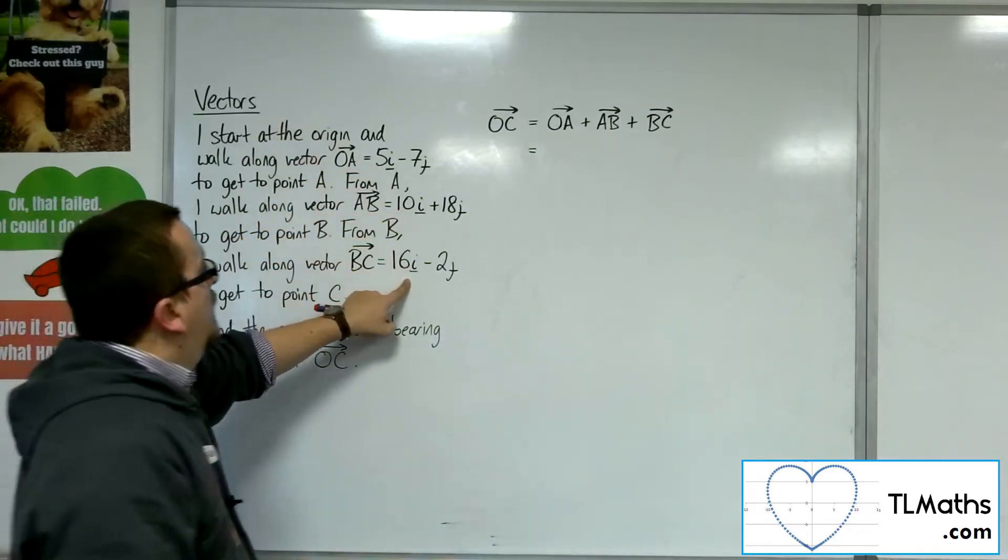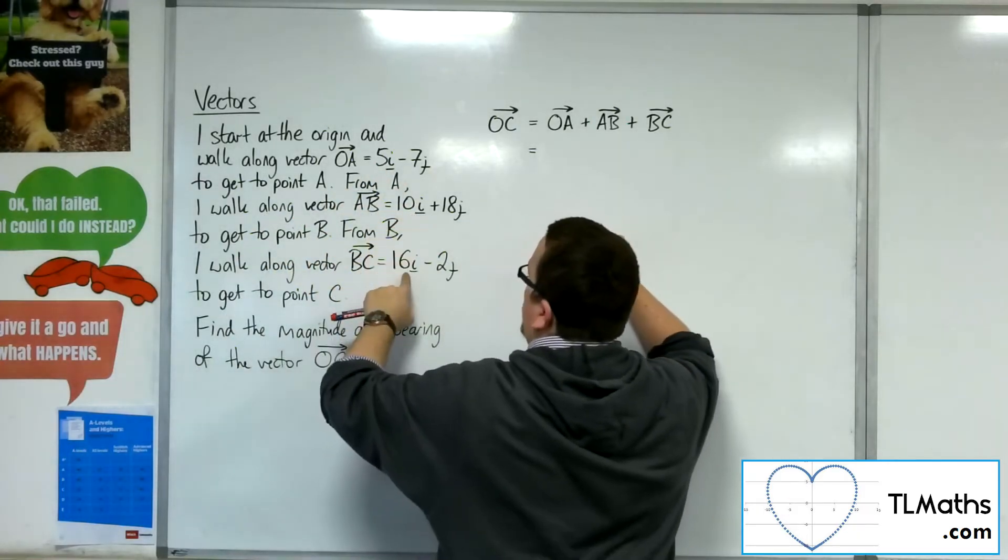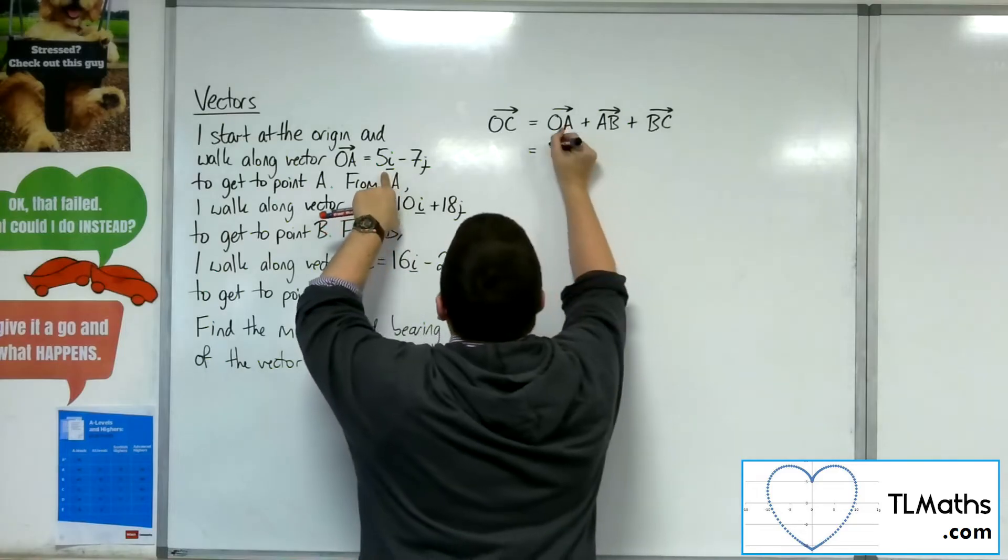This one, this one, and this one. So I've got 5 plus 10 plus 16, which is, well, that's 26, so that's 31i.